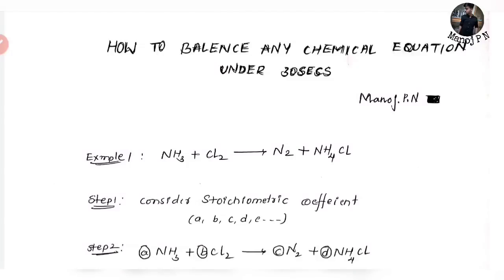Hi guys, welcome back to another video. So, how many questions about KCDL? A chemical equation is to balance the equation. Balancing the equation means finding the stoichiometric coefficients. You have to find out the value of the stoichiometric coefficients. This is basically the problem — the main basic thing is to balance the equation.